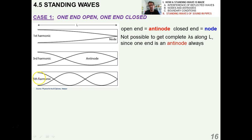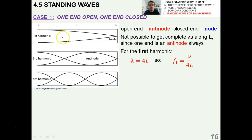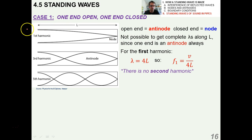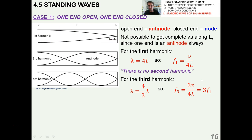There are lots of different combinations of what you can fit inside of that length L, but that is a boundary condition where one end is a node and the other is an antinode. For the first harmonic, lambda equals 4L, so F1 equals V over 4L. In other words, L is one quarter of a wavelength. There is no second harmonic because of the initial boundary condition of there being a node and an antinode at either end.